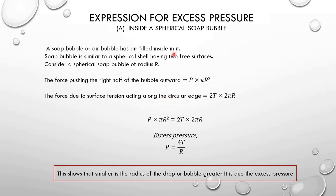Now, for excess pressure inside a soap bubble: the force due to excess pressure is P × πR², but the force due to surface tension is 2T × 2πR, because a soap bubble has two surfaces. In equilibrium, these are equal, giving excess pressure P = 4T/R for a soap bubble. This is a very important detail.